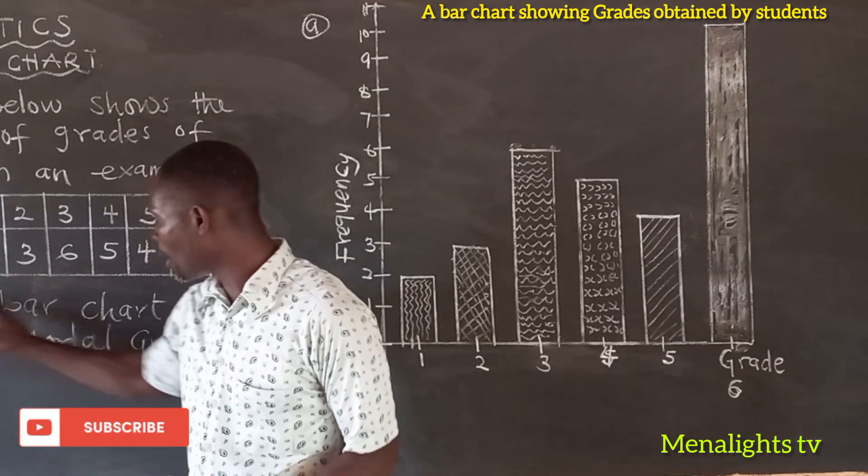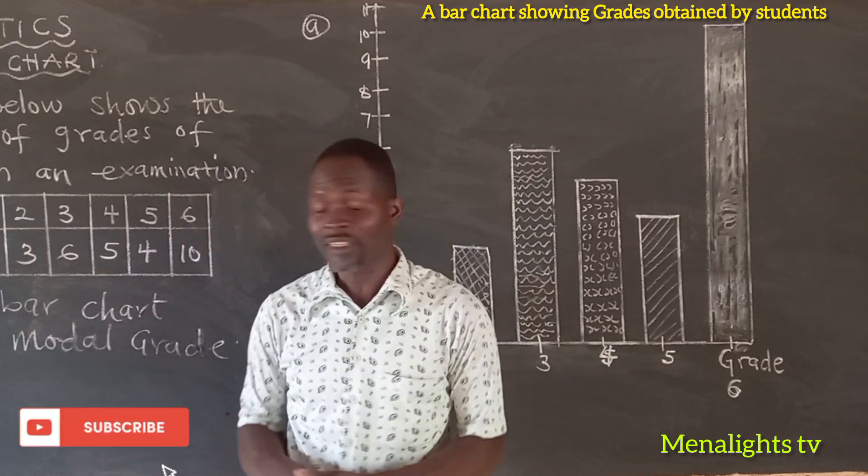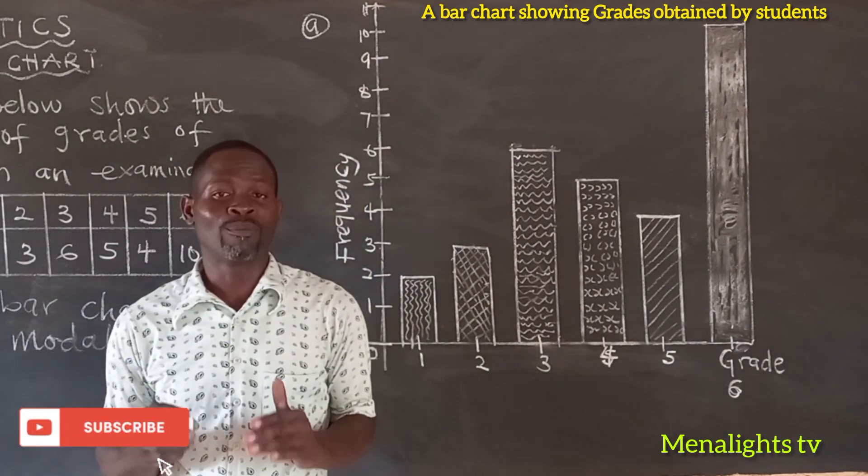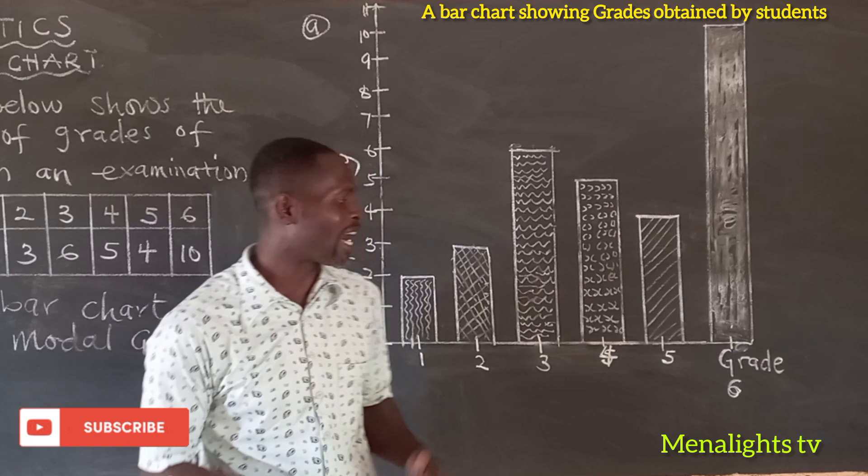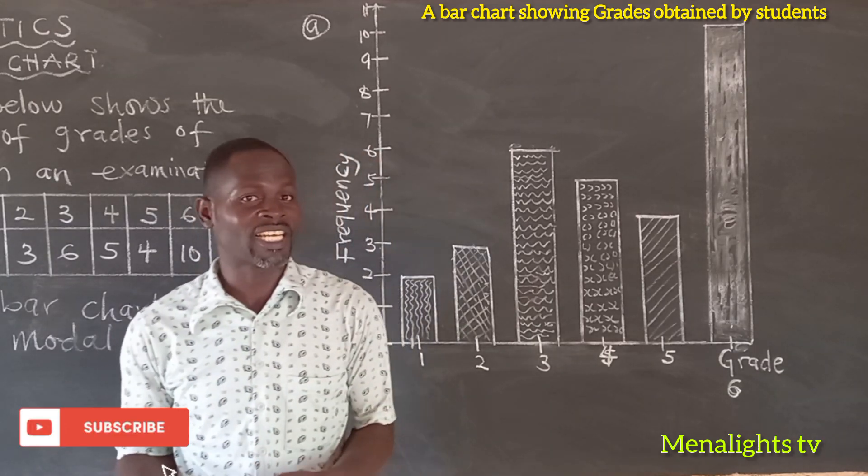Now when you look at it, the question says draw a bar chart, that's the bar chart. Then the second one says find the modal grade. We say that the mode is the most occurring item, or the grade with the highest frequency.